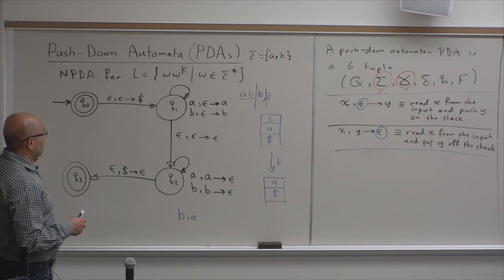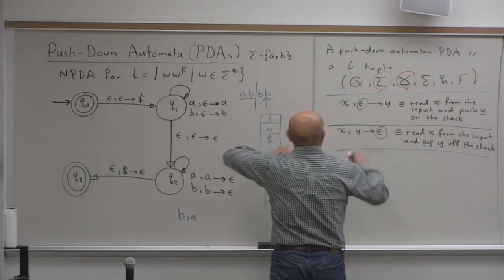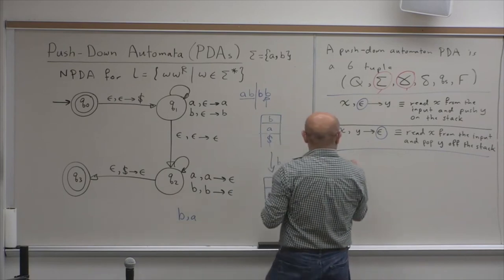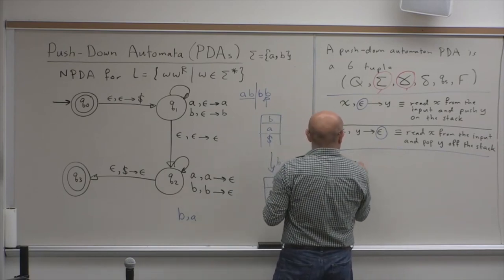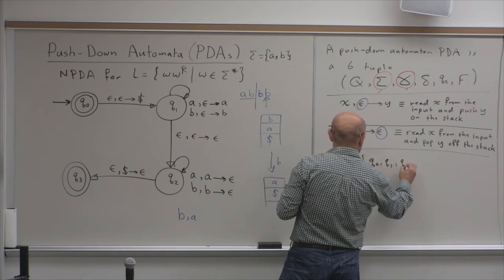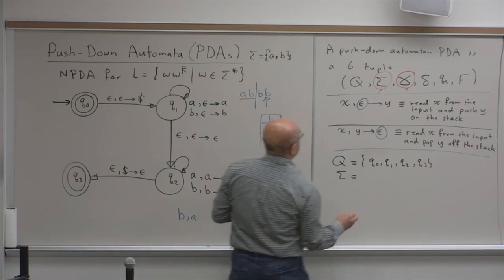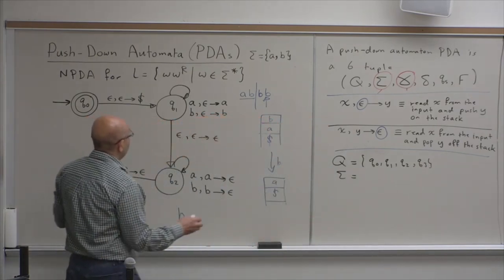Okay. So, let's write the formal description of this. In this case, for this, our Q is equal to Q0, Q1, Q2, and Q3. Our sigma is equal to A and B.